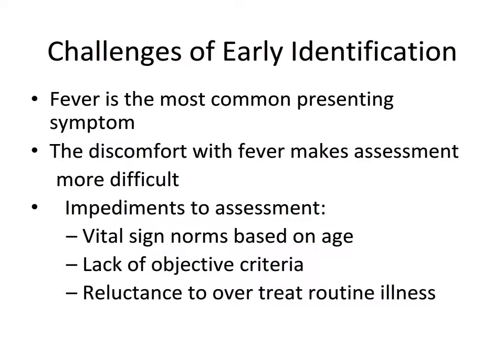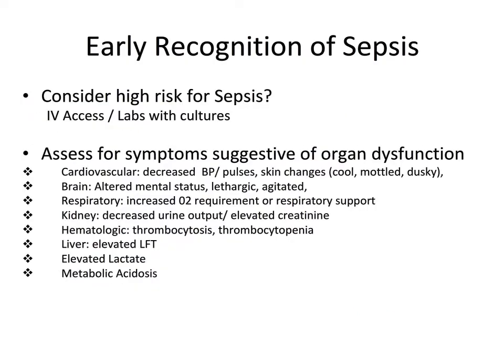Phlebotomy also creates difficulty in assessing these patients. When you identify your pediatric patient as high-risk for sepsis, obtain IV access, laboratory studies including CBC, lactate, and blood cultures, and then assess for symptoms suggestive of organ dysfunction — such as cardiovascular findings with cool, mottled extremities, altered mental status, lethargy, respiratory compromise, decreased urinary output, elevated liver function tests, elevated lactate, and metabolic acidosis.